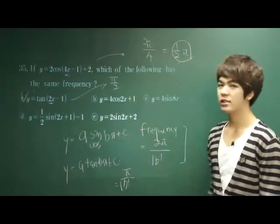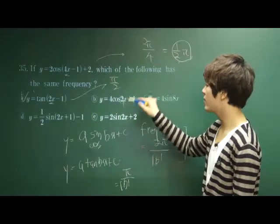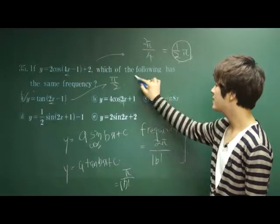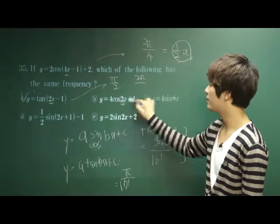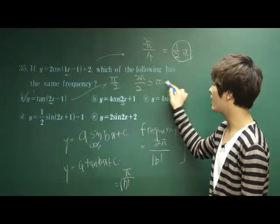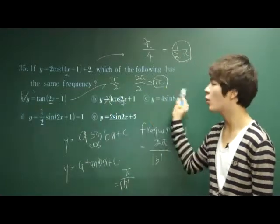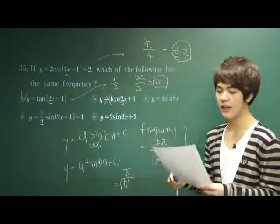Why not b the answer? Because the cosine 2x, the frequency for the cosine or sine value is 2π over b, so 2π over 2 is equal to π, right? It is not the same as π over 2. Therefore, b is not the answer. Accordingly, other things cannot be the answer as well.